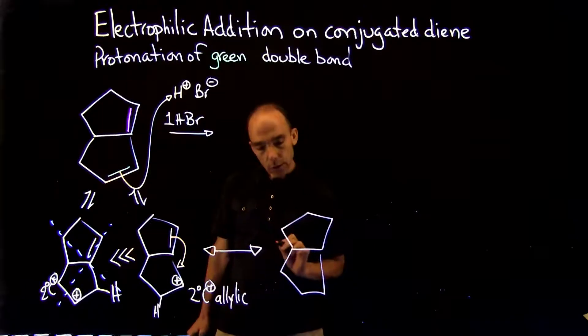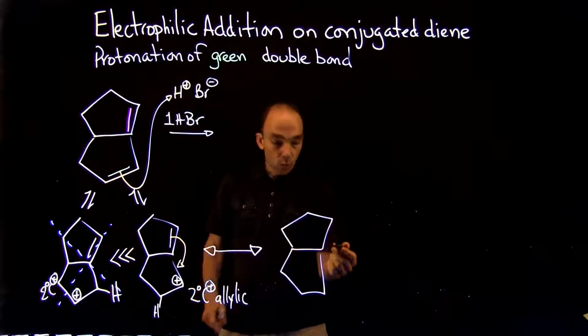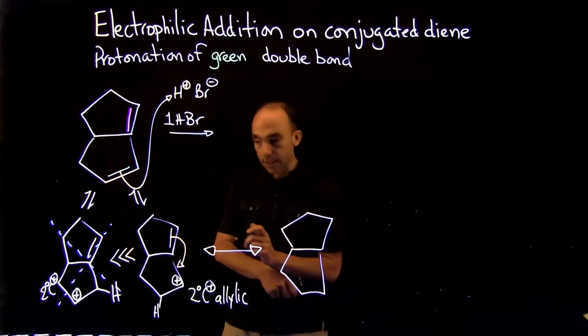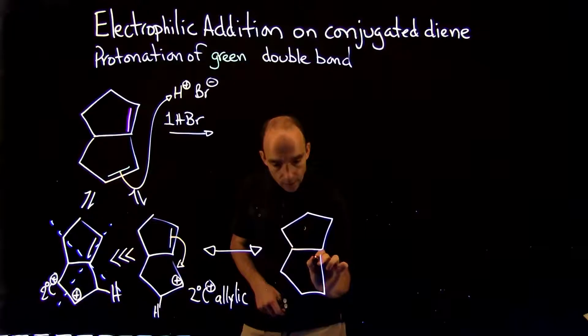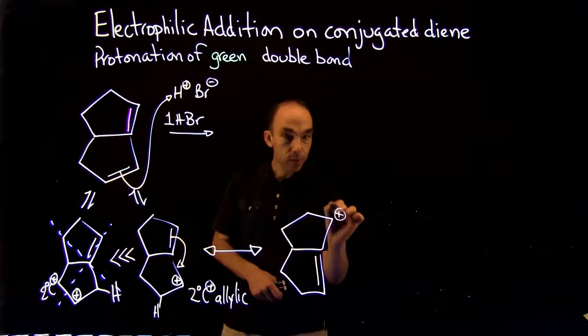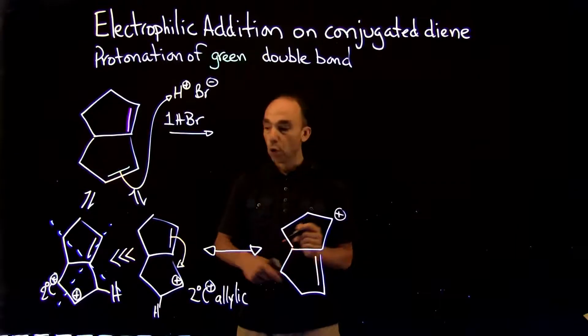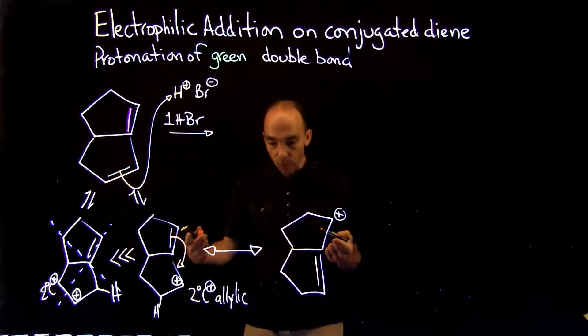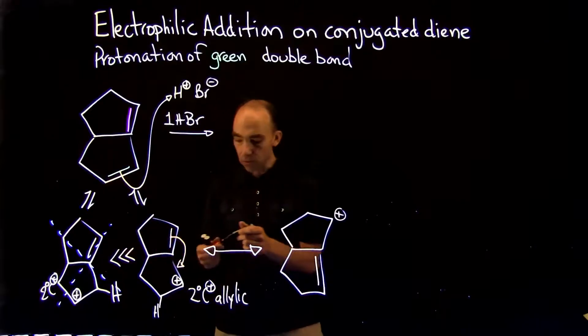So let's do this. So once again the carbon architecture stays the same, the double bond is moving right there, and we now have the positive charge at this position. So this is the intermediate form which is more stable than the unfavored intermediate.